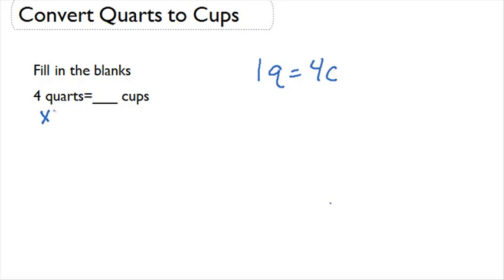we're going to want to multiply that number by four. Because each one of those four quarts has four cups in it. Four times four is sixteen, so we know that four quarts is equal to sixteen cups.